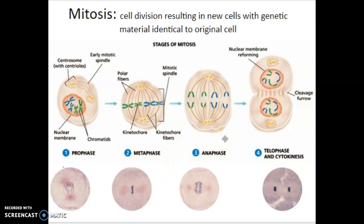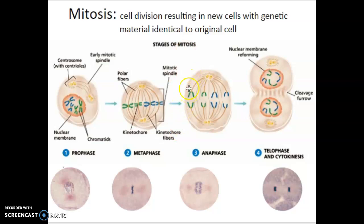In anaphase, the chromosomes split and go to opposite ends of the cell. The centromere splits, and what was one chromosome with two chromatids connected by a centromere becomes two chromosomes pulled to opposite poles by kinetochore fibers. At the same time, the cell is elongating because the polar fibers are pushing. You have a pushing of polar fibers and a pulling of kinetochore fibers, resulting in chromosomes being pulled to opposite ends.